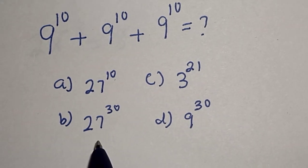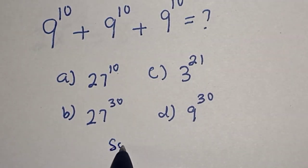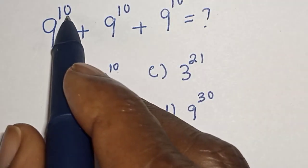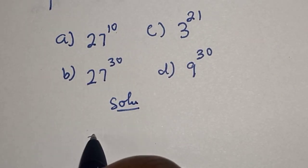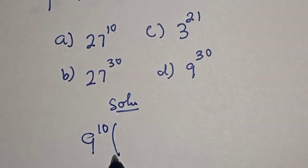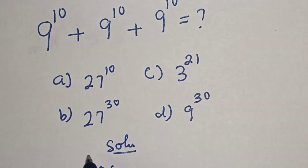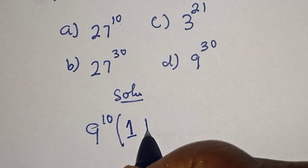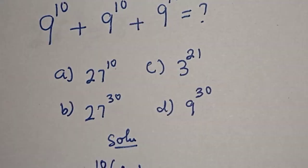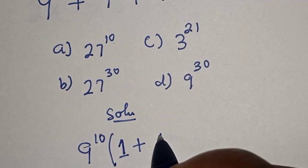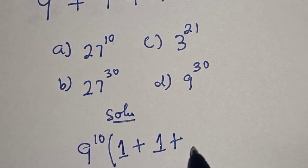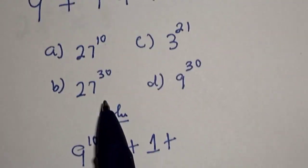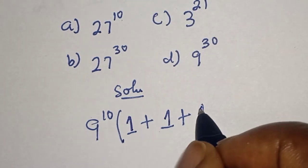Like, share, comment and subscribe. Solution: 9 raised to power 10 is common here. 9 raised to power 10 bracket — 9 raised to power 10 divided by 9 raised to power 10, this is 1, plus 9 raised to power 10 divided by 9 raised to power 10, this is also 1, plus 9 raised to power 10 divided by 9 raised to power 10, this is also another 1.